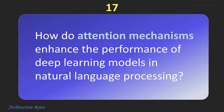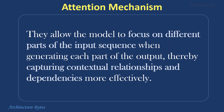How do attention mechanisms enhance the performance of deep learning models in natural language processing? They allow the model to focus on different parts of the input sequence when generating each part of the output, thereby capturing contextual relationships and dependencies more effectively. This leads to better handling of long-range dependencies and improved performance on tasks like translation, summarization, and question answering.